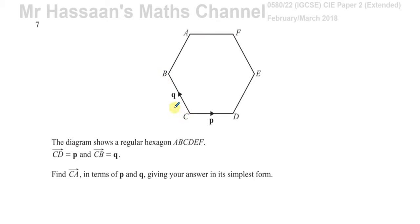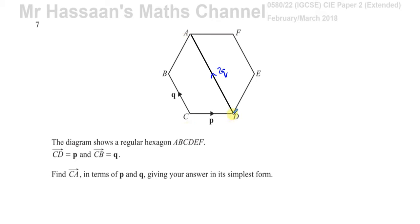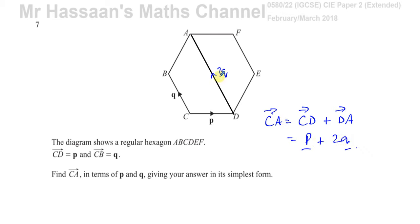We need another way to get from C to A in terms of vectors p and q. What we should realize is there's a vector from D to A. If I draw a line from D to A, that vector is parallel to CB and also twice its length — so it equals 2q. Therefore, the vector from C to A is C to D plus D to A, which gives us p + 2q.